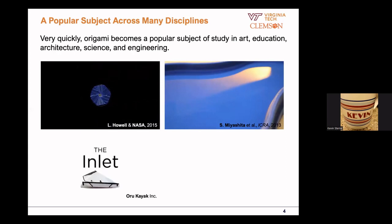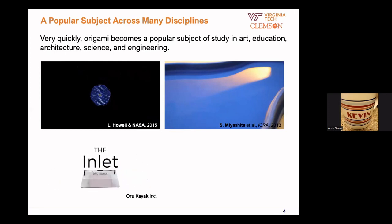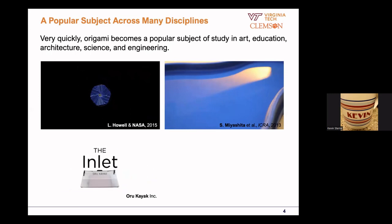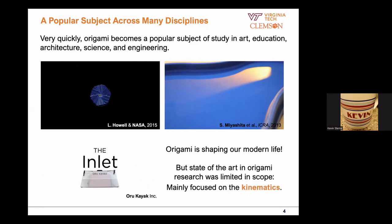Here's one example closer to your daily life: an origami kayak you can buy online right now for about two thousand dollars. The idea is that you can fold this kayak into a small volume to fit in the trunk of your car or the checked luggage for your flight, bring it to the most remote corner, and then deploy it on the spot. Origami has been, and will continue to, shape our modern life in many different ways — you're going to see more origami-inspired products, like foldable phones, foldable furniture, or even origami clothes.